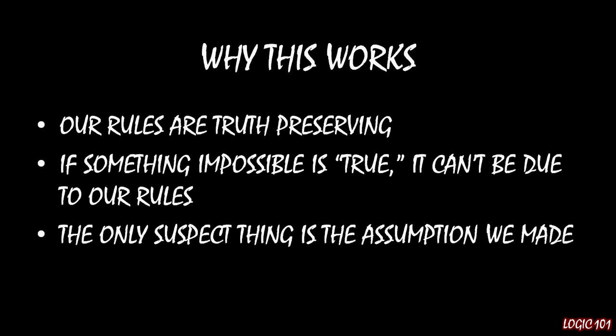And here's why that works. Our rules — the tools, strategies, and general ideas on how to write a proof — everything covered so far in this course is truth-preserving. It takes things that are true and produces other things that are true as a consequence. Well, if we get to something impossible as being true using our rules, it can't possibly be the fault of our rules that we've arrived at something impossible. So if it's not the rules that are at fault, the only other suspect is the assumption that we made. The assumption must be false, and that's how we get to showing that the original statement P is true.